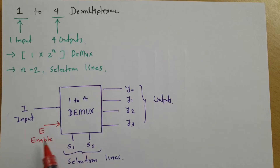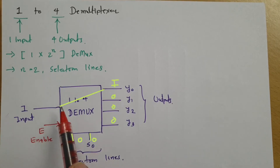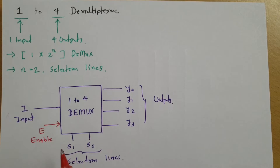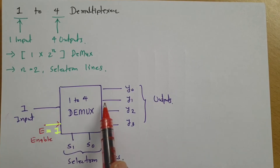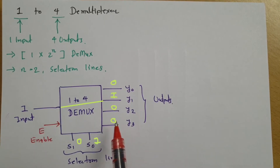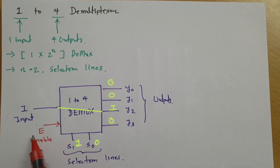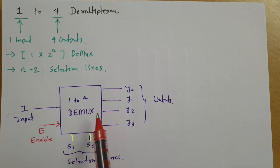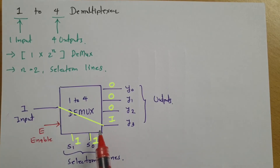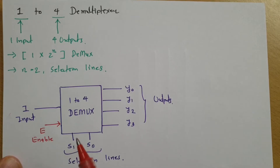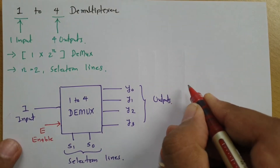When enable equals 1, there are four possibilities with the selection lines. If S1 S0 is 0 0, input transfers to output Y0; if S1 S0 is 0 1, input transfers to Y1; if S1 S0 is 1 0, input transfers to Y2; and if S1 S0 is 1 1, input transfers to Y3. All other outputs stay 0 in each case.